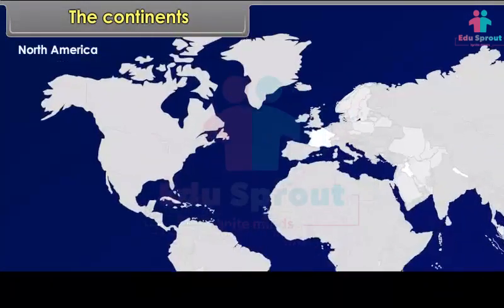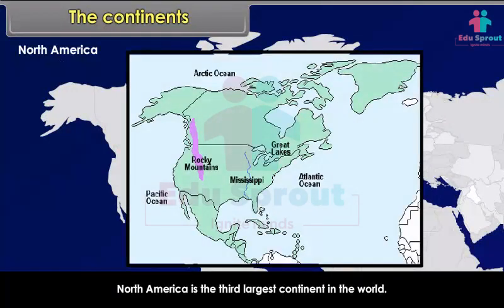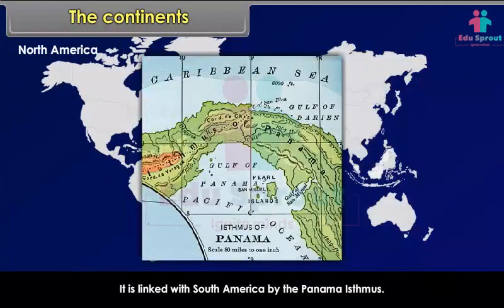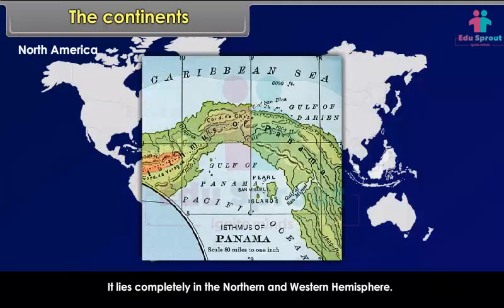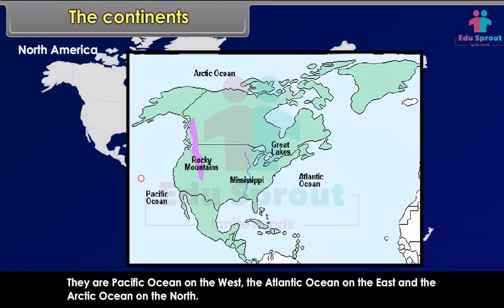North America is the third-largest continent in the world. It is linked with South America by the Panama isthmus. It lies completely in the northern and western hemisphere. Three oceans surround it — the Pacific Ocean on the west, the Atlantic Ocean on the east, and the Arctic Ocean on the north.